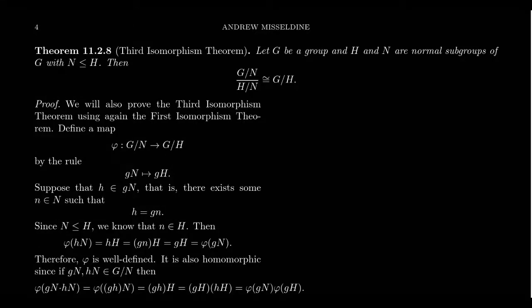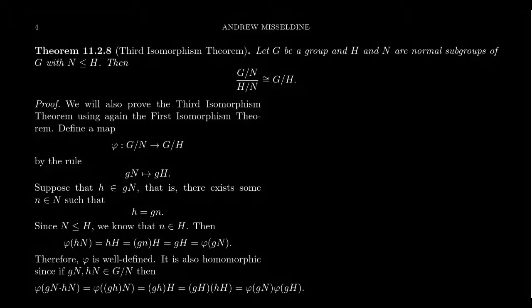In this video we're going to prove the third isomorphism theorem for groups. There's an analogous third isomorphism theorem for other algebraic categories like rings and modules and the like. We're going to prove this in the context of groups. The third isomorphism theorem is going to be very similar to the second isomorphism theorem in the nature of its proof. We should probably give the statement of this theorem first.